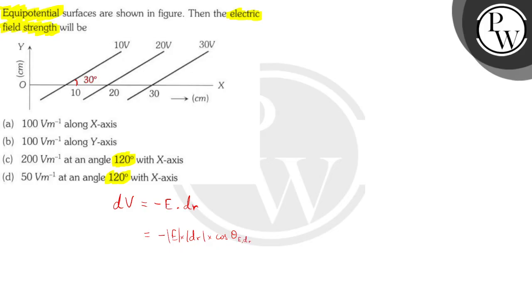Now, as you can see, the equipotential surface is along this axis. So if we want the value of E, we can say that E is equal to minus dV divided by dr cos theta.